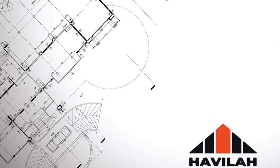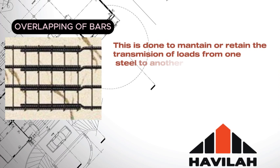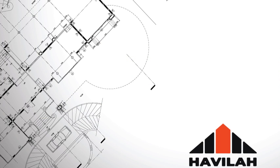Overlapping is required in construction to maintain the transmission of load from one steel bar to another. For compression members, the overlap length should equal 40d — that is, 40 multiplied by the diameter of the reinforcement. For tension members, the overlap length should equal 50 multiplied by the diameter of the reinforcement.